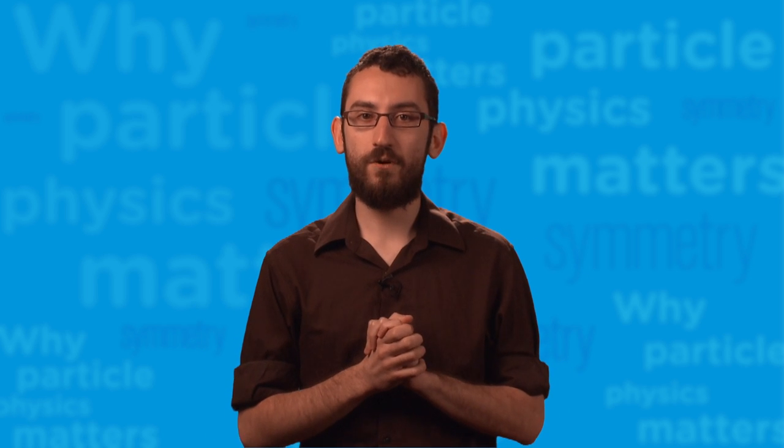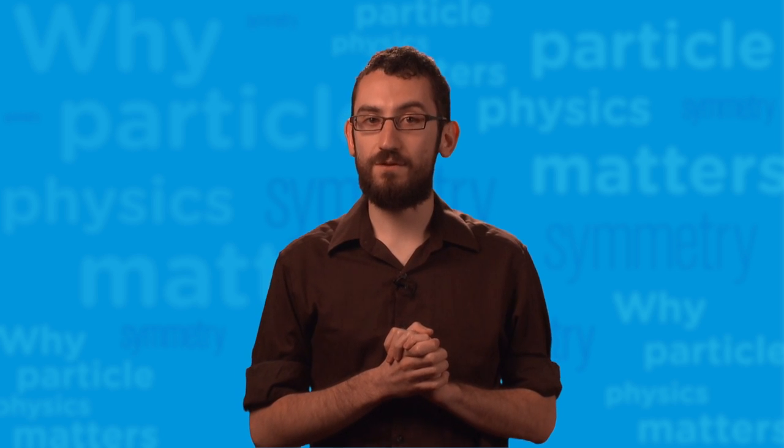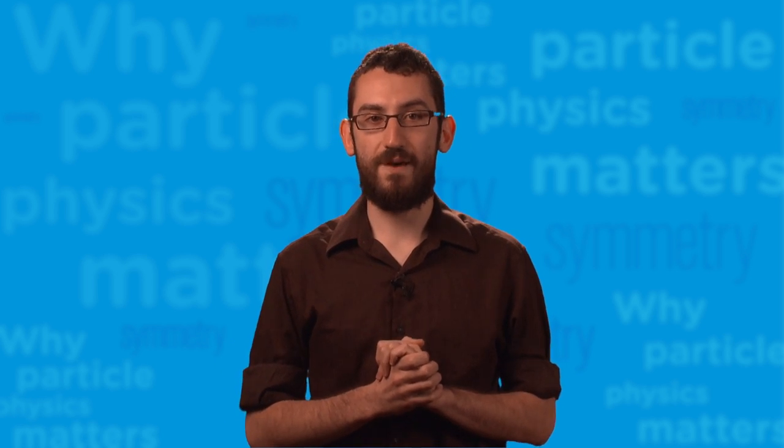Here's the kicker. The W boson gets its mass because it interacts with the Higgs field. In 2012, when scientists at CERN discovered the Higgs boson, they proved how the W boson gets its mass.